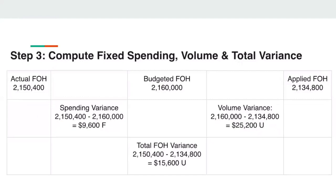Step three is computing the fixed spending, volume, and total variance. Actual fixed overhead is given as $2,150,400, and budgeted fixed overhead is $2,160,000. Applied fixed overhead is $2,134,800 from the previous step. To find spending variance, subtract actual by budgeted: this gives $9,600F. Since it is negative, it is favorable and we place an F beside it. We do not include the negative sign, as the F represents it.